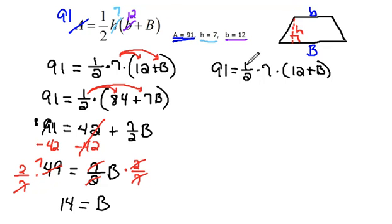Because 1 half is being multiplied to everything here, we could do the opposite of that to get rid of it first and not have to worry about any fractions. So I could multiply by the reciprocal. Because 1 half times 2 is 1, those cancel out. 2 times 91 would be 182 equals 7 times 12 plus b.